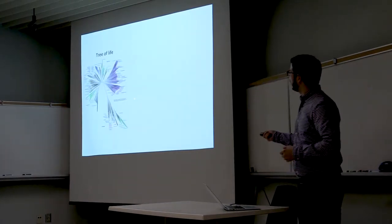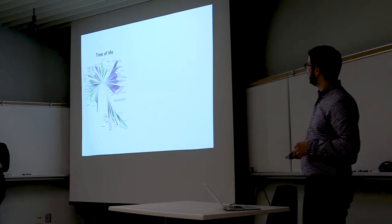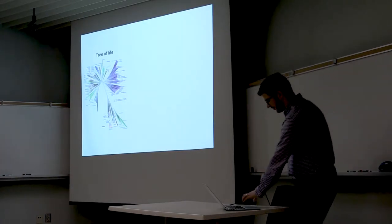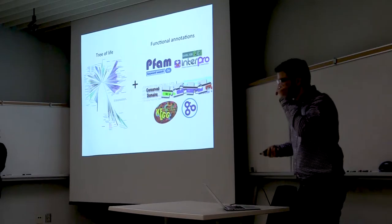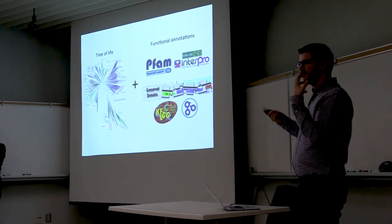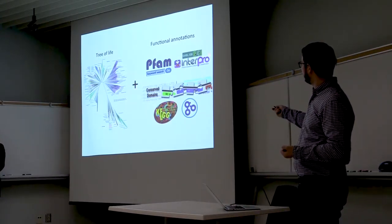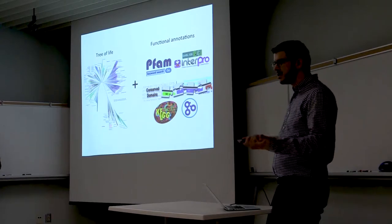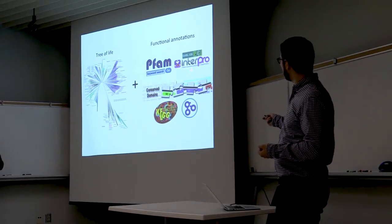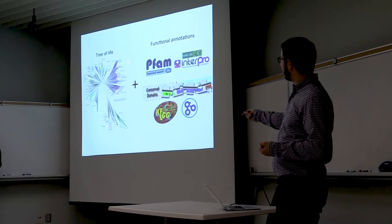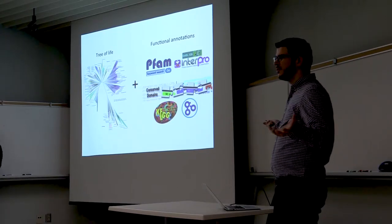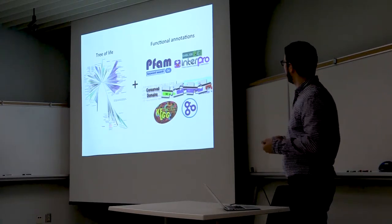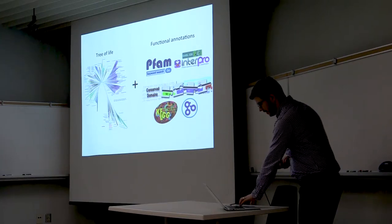The way I'm going to frame this problem today is: how can we start with a tree of life and merge it with gene annotation data and protein function data? We have growing bioinformatics databases with a vast amount of annotation information from PFAM, from KEGG, from GO. We also have these trees of life being built, but there are few attempts that have actually tried to merge these two together.